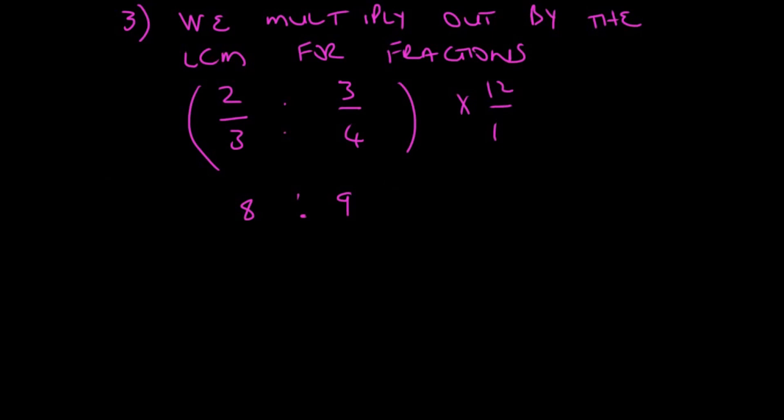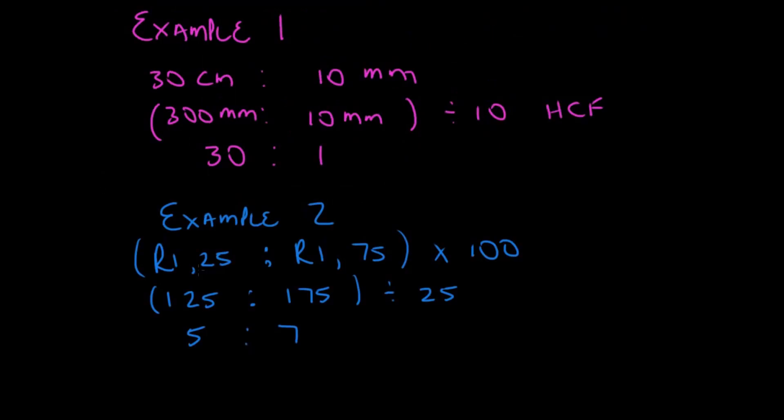Let's look at a few examples. Let's look at example 1, which was the same as the simplification that we did earlier. 30 centimeters as to 10 millimeters. I mentioned to you that you need to convert. So, that's 300 millimeters as to 10 millimeters.